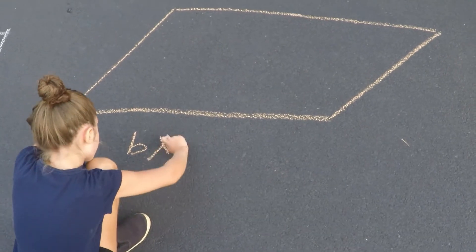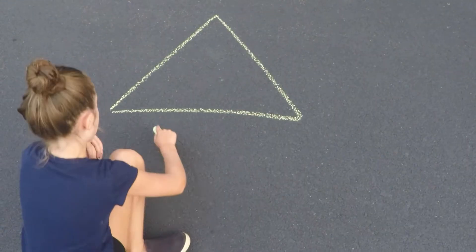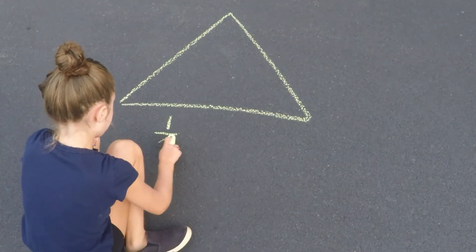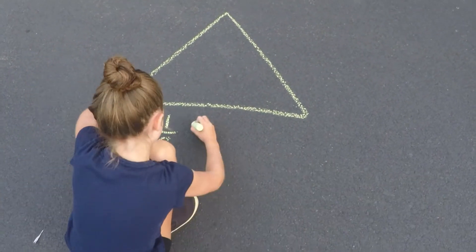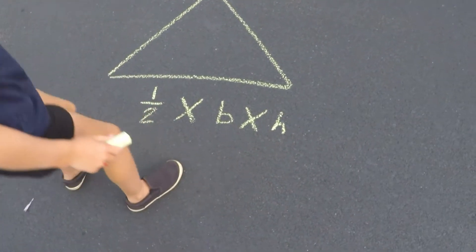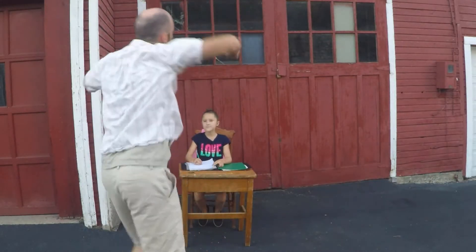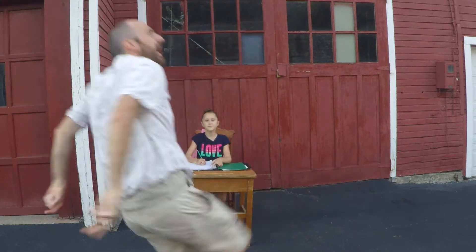Parallelogram: base x height! Triangle: one half base x height! Parallelogram: base x height! Triangle: one half base x height! A parallelogram leans to the sides. A triangle has three sides. The formulas are base x height and one half base x height. Clear the area!